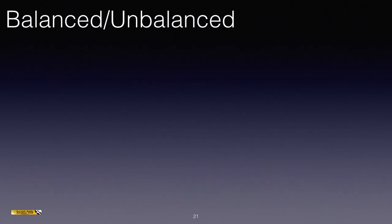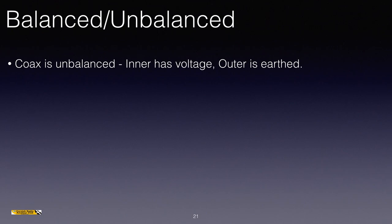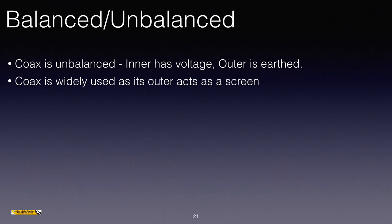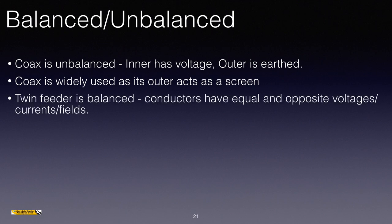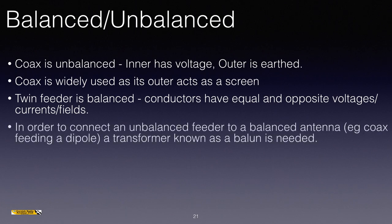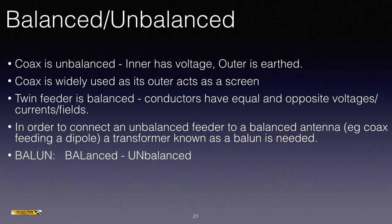Let's look at balanced and unbalanced. Coax is unbalanced: the inner has the voltage and the outer is earthed. Coax is widely used as its outer acts as a screen. Twin feeder is balanced: conductors have equal and opposite voltages, currents, and fields. In order to connect an unbalanced feeder to a balanced antenna — for example, connecting coax to a dipole, which is a balanced antenna — a transformer known as a balun is needed. Balun stands for balanced to unbalanced: it takes BAL from balanced and UN from unbalanced. It transforms a balanced feeder to an unbalanced antenna, or an unbalanced feeder to a balanced antenna.